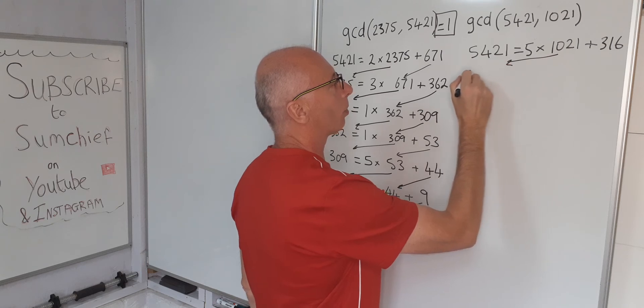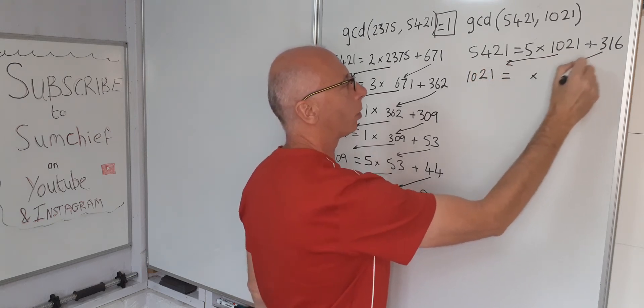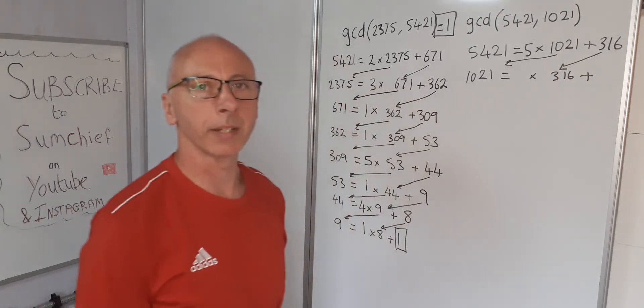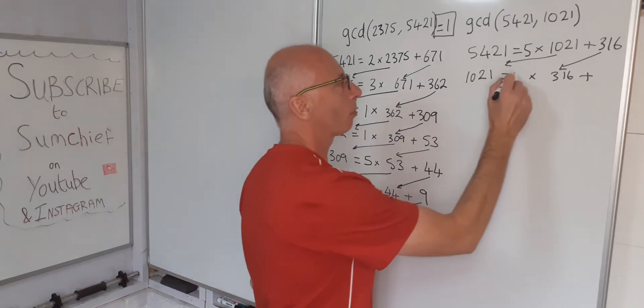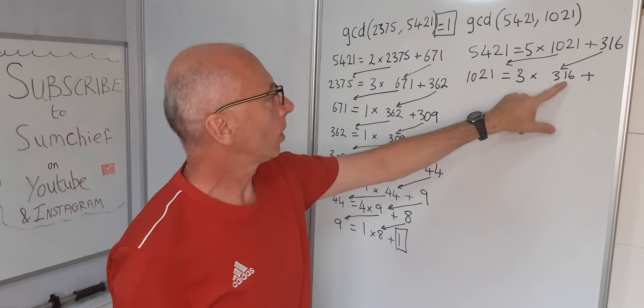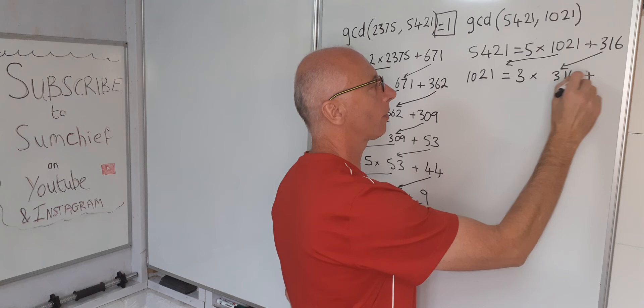So now bring the 1021 out front. That equals something multiplied by 316 with a remainder. 316 times 3 is going to be just below that. That will give us 948. So 52 plus 21, that's 73.